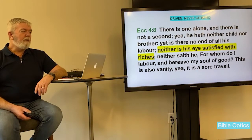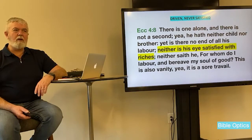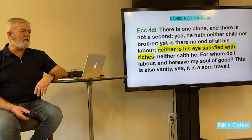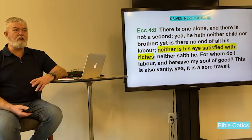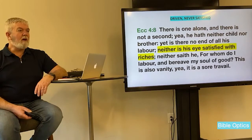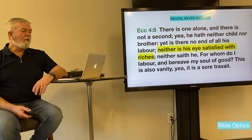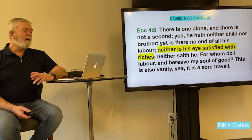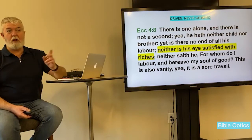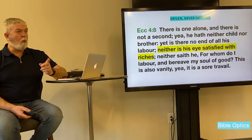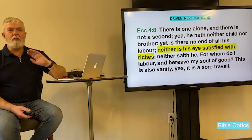Ecclesiastes 4 says: there is one alone and there is not a second — somebody on their own, gifted and talented, who labors for themselves. Yet there is no end of all his labor, neither is his eye satisfied with what he has achieved or accumulated. He says: for whom do I labor and deprive my soul of good? This is a vanity, a sore travail.